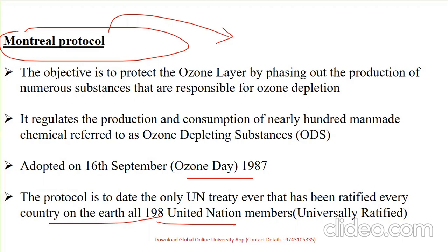The Kyoto Protocol was adopted in Kyoto, Japan on 11th December 1997. The key word is greenhouse gases. It went through a complex ratification process and came into force on 16th February 2005; there are currently 102 parties. It operationalizes the UN Framework Convention on Climate Change by committing industrialized countries to limit greenhouse gas emissions — essentially an international agreement aimed at reducing carbon dioxide emissions.